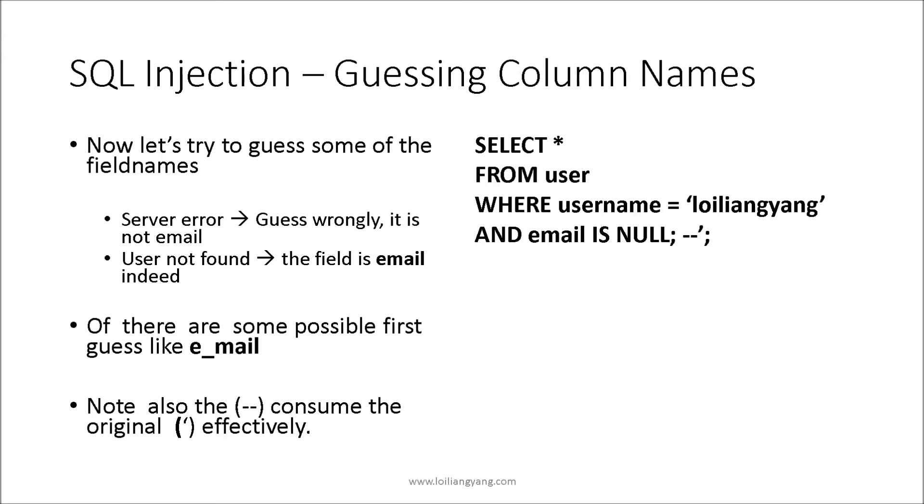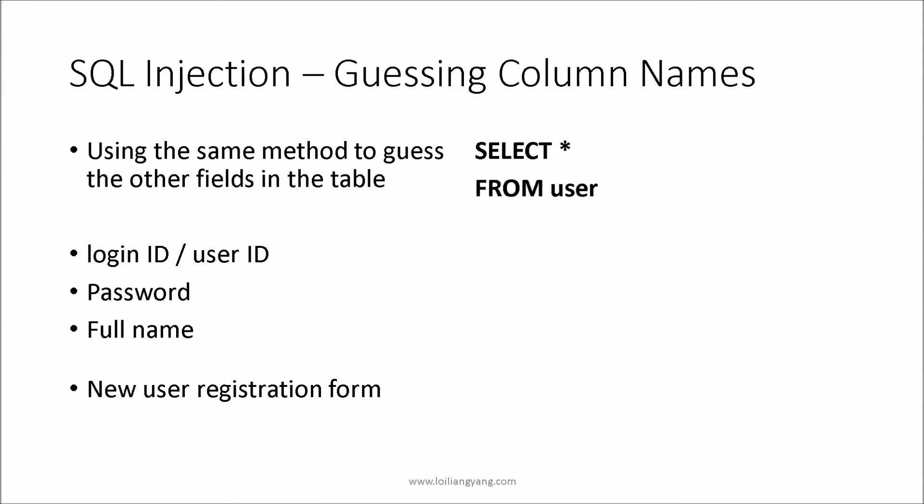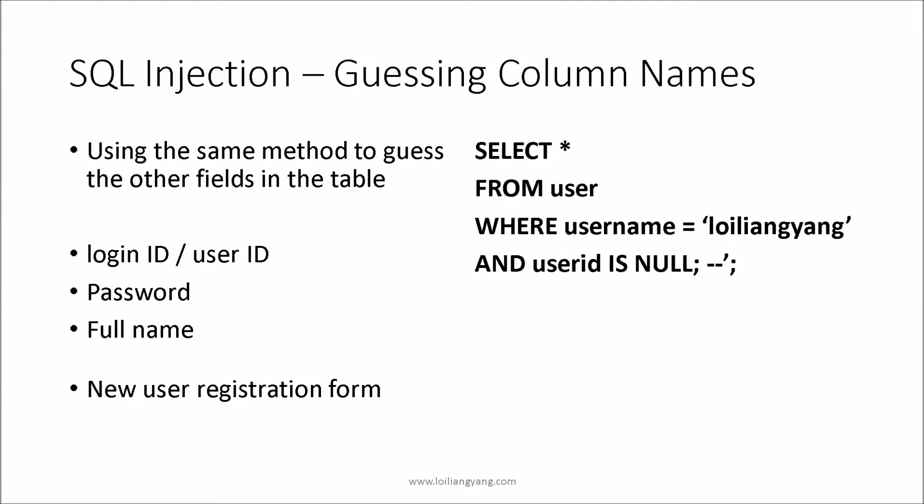However, if the server returns that the user is not found, it means the column does exist. So we need to keep guessing — for a column like email, it could be e_mail, or electronic_mail, or the likes. We need to find the important columns. Also, at the end of the SQL command, we end it with a double dash and single quote to terminate the command immediately. We are trying to guess column names to get information needed to gain further privileges or sensitive information.